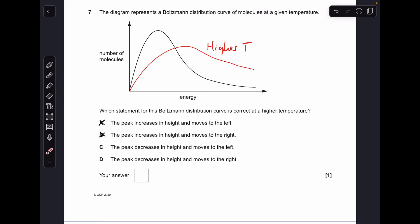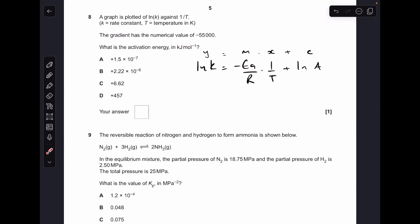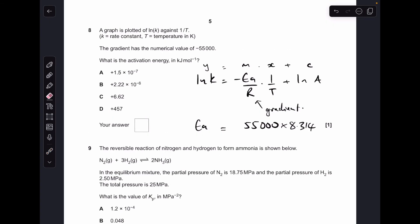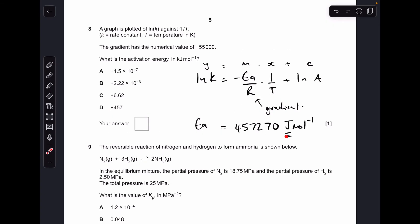Number eight, obviously testing your knowledge of the Arrhenius equation. So there it is there. I always write it out in this form, the ln version, because it's easy to see the y = mx + c aspects to it. So this minus Ea over R is the gradient, so that means minus Ea over R equals minus 55,000. First thing I'm going to do is get rid of the minus signs because I've got one on each side, and then to calculate Ea, we're going to multiply 55,000 by R. So 55,000 times 8.314 gives 457,270 joules per mole. So we'll divide that by a thousand to put it into kilojoules per mole, which gives option D.